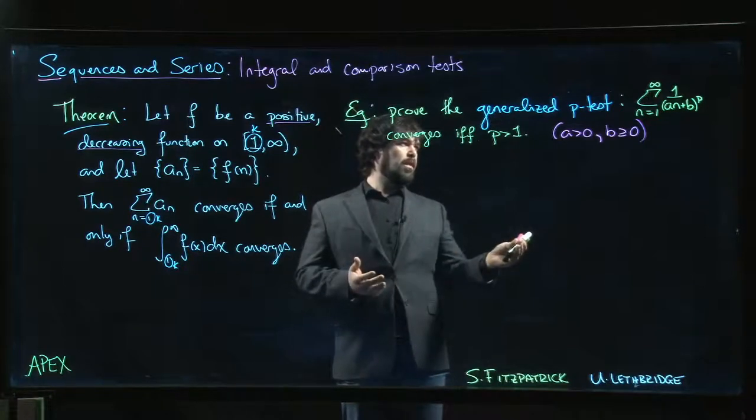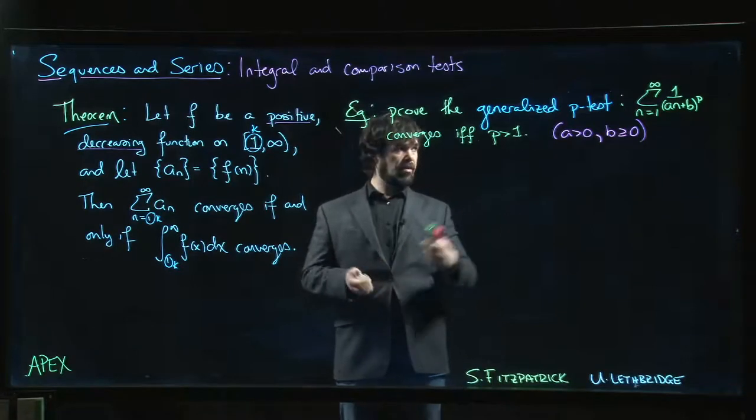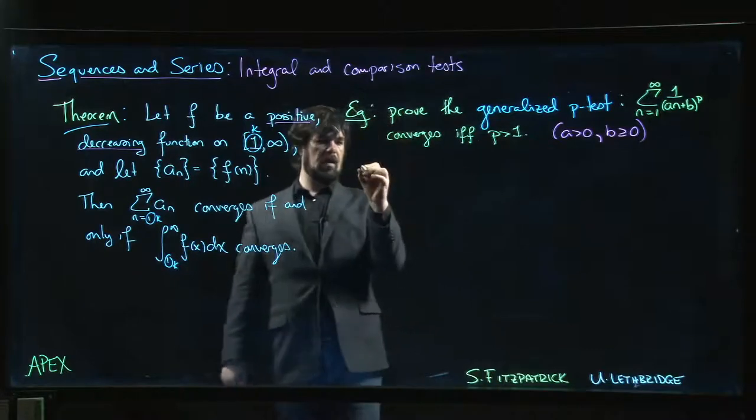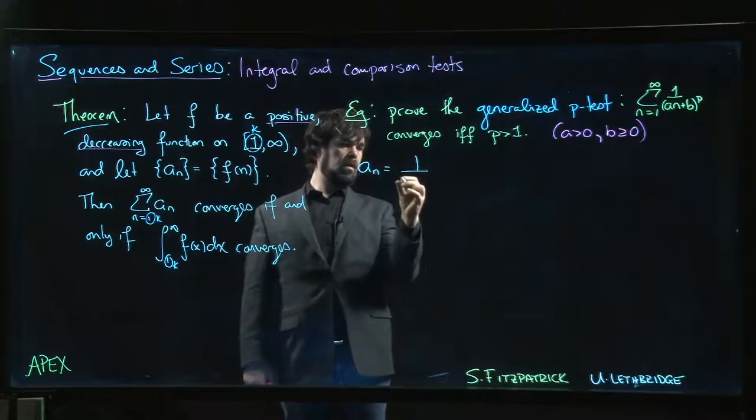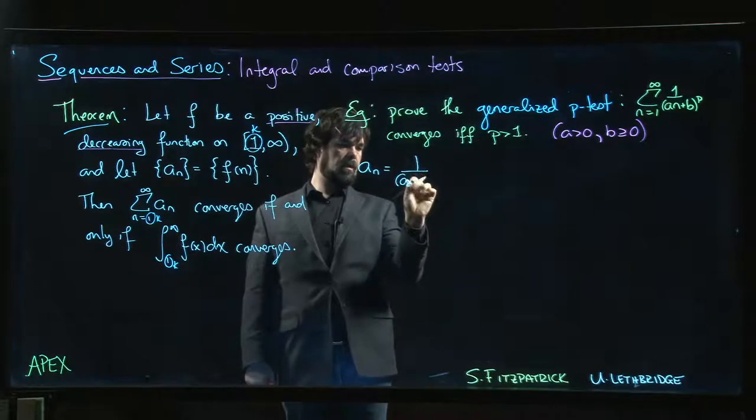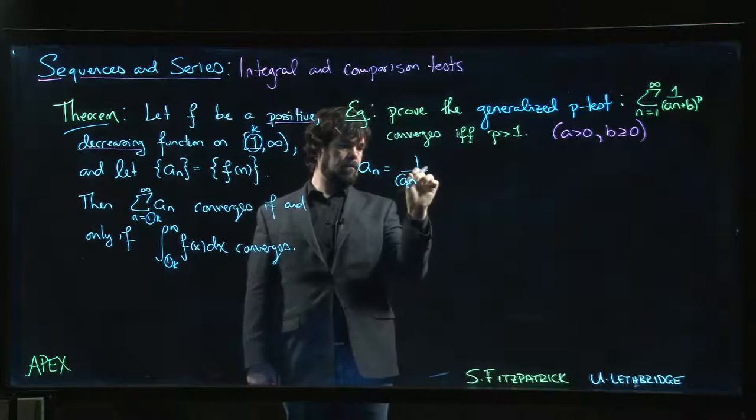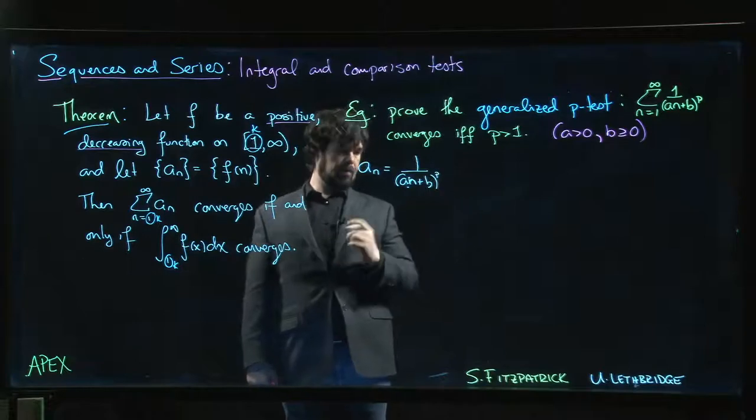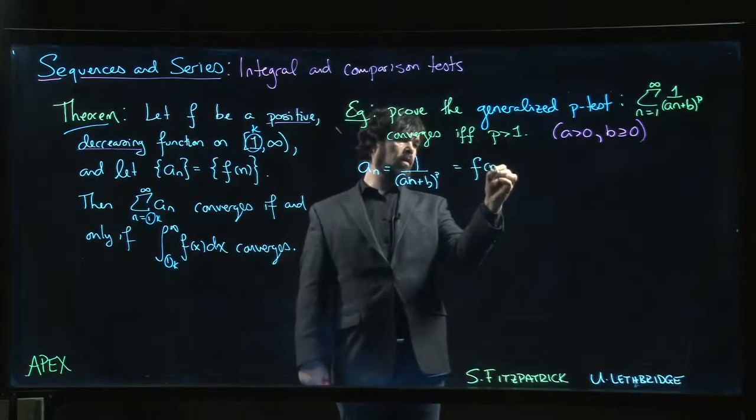So with that in place, basic graph transformations should tell you what this thing looks like. Our a_n looks like 1 over (a times n plus b) to the power of p, and that is equal to f(n) for a function f(x) given by 1 over (ax + b) to the p.